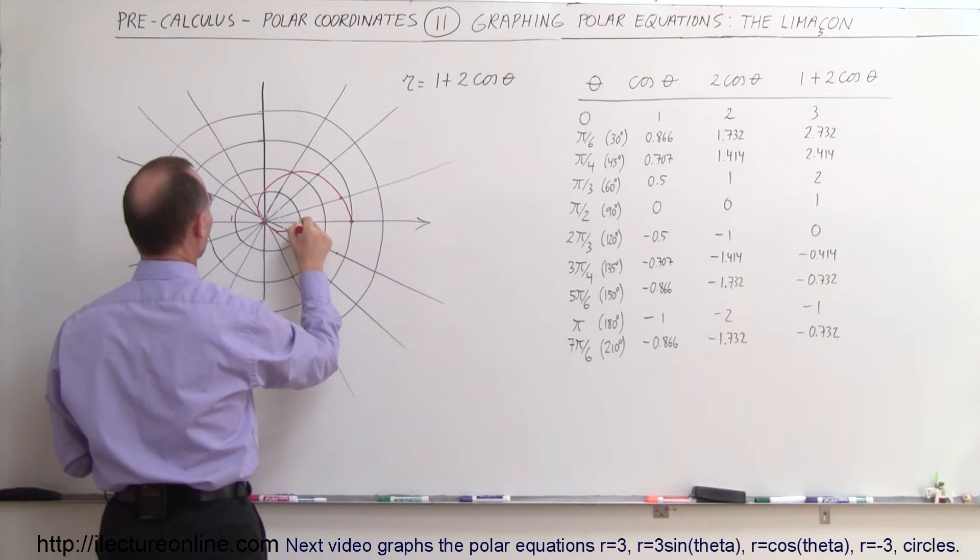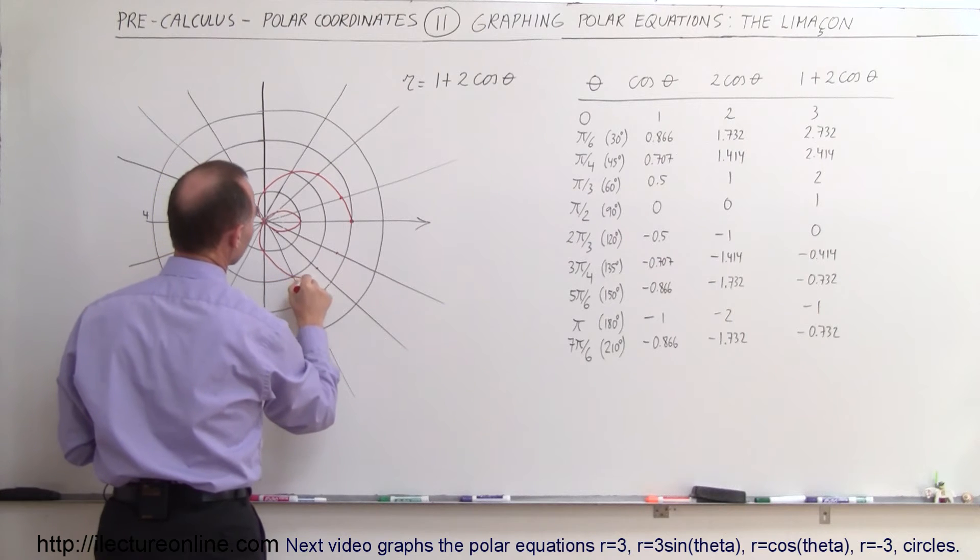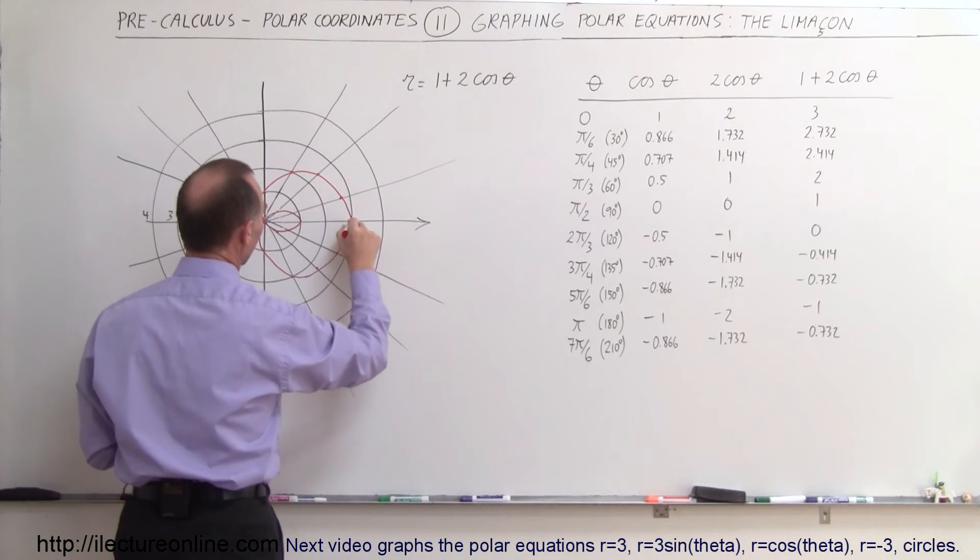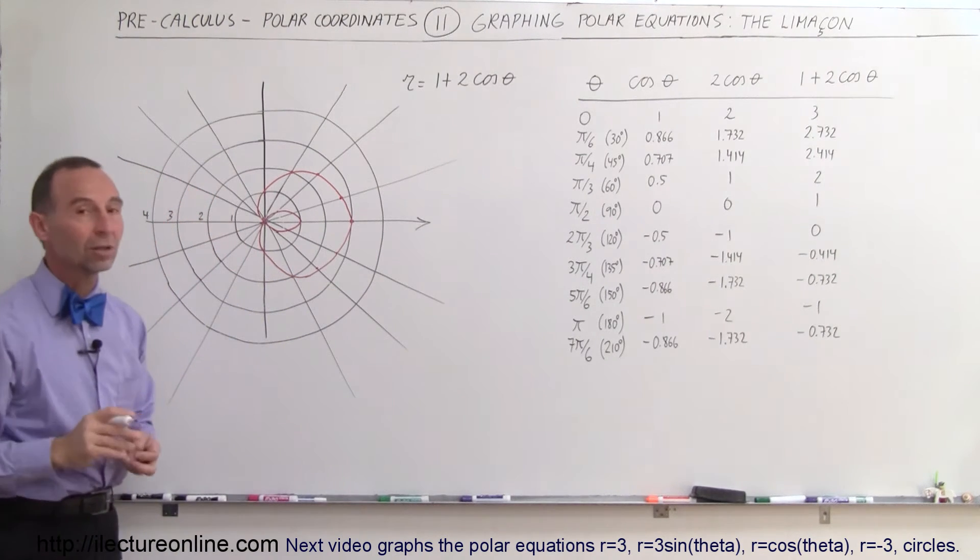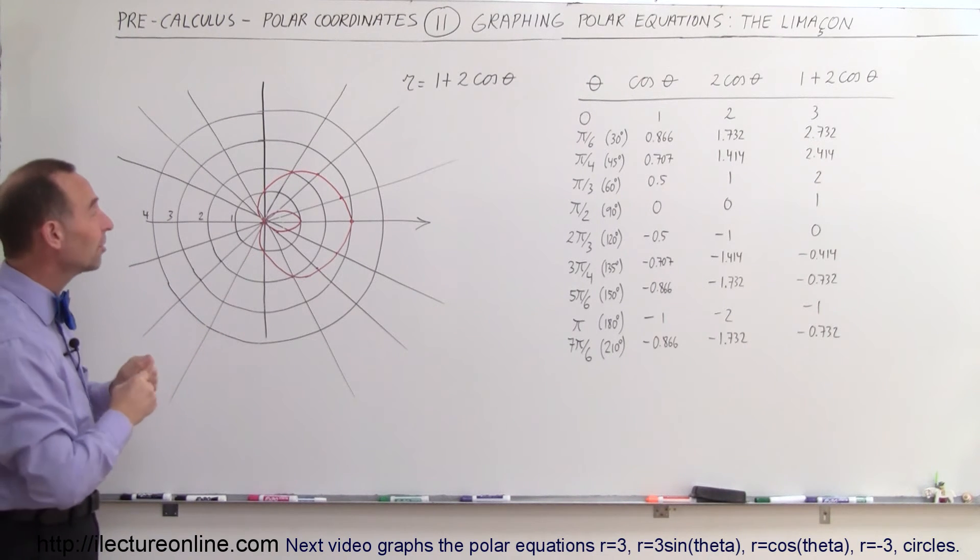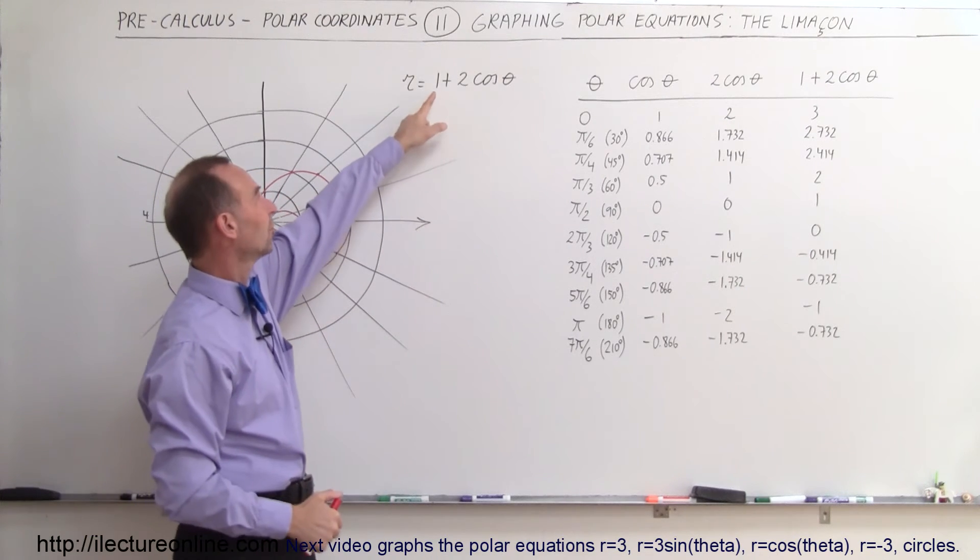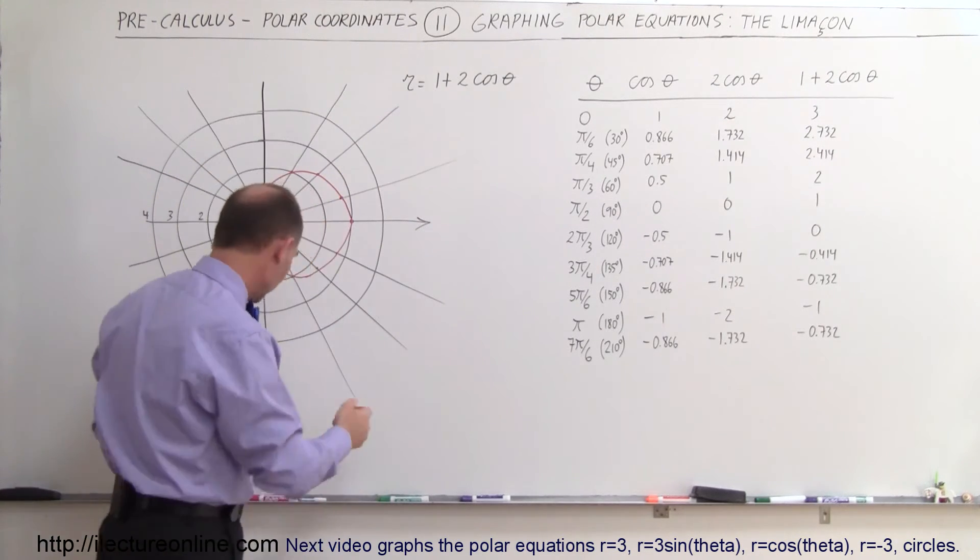And you can see that this is simply going to go like this, and then come this way, and like that. And that is what we call a Limaçon of this particular type. The shape of this curve will change depending upon what the numbers 1 and 2 turn out to be. So if you call this a and b, the general equation.